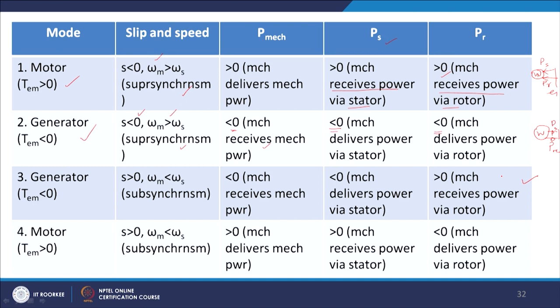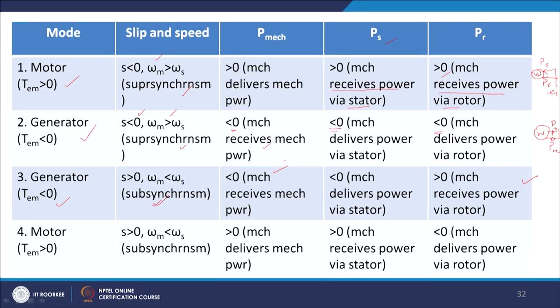The third mode is the generating mode at sub-synchronous speed, where TEM is less than 0 and the rotor speed is below the synchronous speed — known as sub-synchronous speed. Here P_mechanical is less than 0, meaning it receives mechanical power. PS is less than 0, meaning it delivers power via the stator. However, PR is greater than 0, meaning it receives power via the rotor from the grid. That is why it is called a doubly fed induction generator — power can be extracted from the grid or sent to the grid in a bidirectional manner.